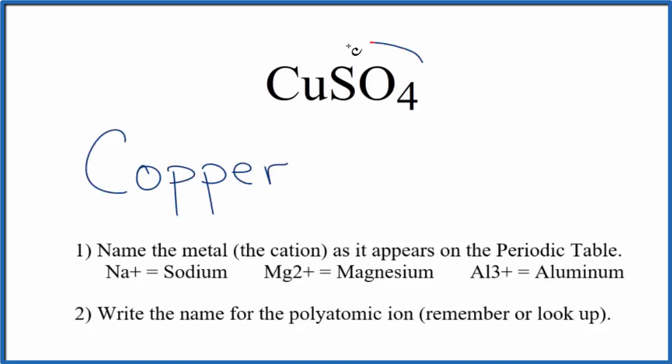Next, we write the name for the polyatomic ion. This is the sulfate ion, one you should remember. Lower case s, and so far the name we have is copper sulfate.